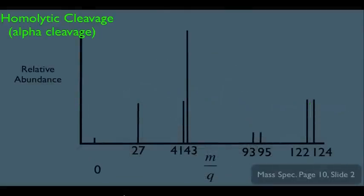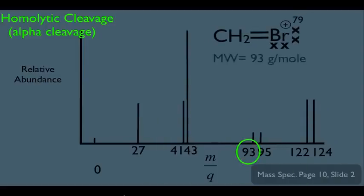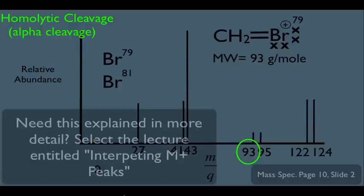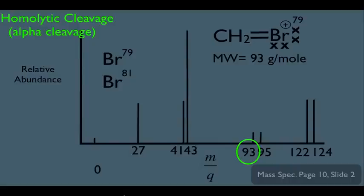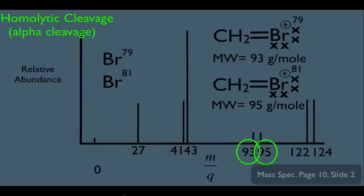Looking at the mass spectrum of this molecule, we see the peak at 93. Because Br comes in two isotopes — Br79 and Br81 — it's also possible to get a peak at 95, with relative heights roughly equal since the relative abundance of Br79 and Br81 is approximately 50-50. There are many different fragmentations to keep track of, but hang on — I'll show you specifically how to apply all this on a typical test question.